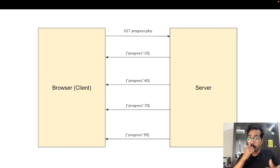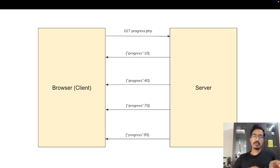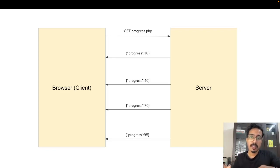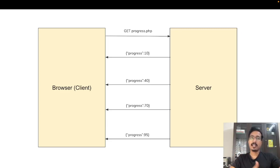So let's see how this works. Initially the browser sends an HTTP request to the server asking for the progress update. The server says: I received this request, but keep the connection alive — don't close it — because I will send you new updates through the same connection whenever I have a new update. This way you avoid bombarding the server with multiple HTTP requests, and there is no overhead of opening and accepting connections repeatedly.